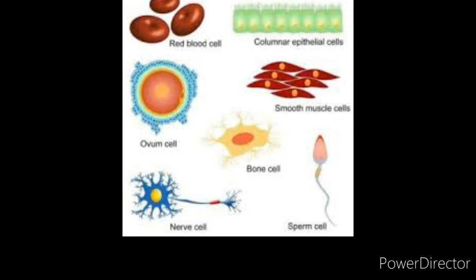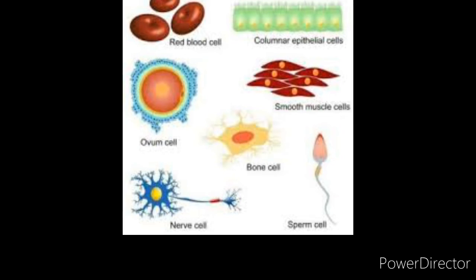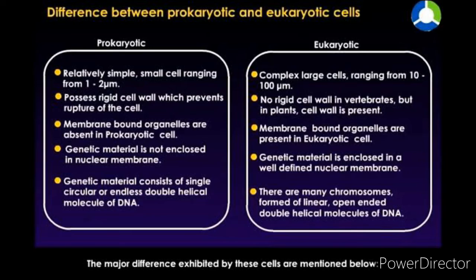Looking through the living world, a large variety of cells can be seen and each cell has a different function of its own. If we analyze the internal structure of cells, we can identify two kinds of cells in the living world: prokaryotic cells and eukaryotic cells. A prokaryotic cell differs from a eukaryotic cell in that it lacks a true nucleus or a membrane-bound nucleus.